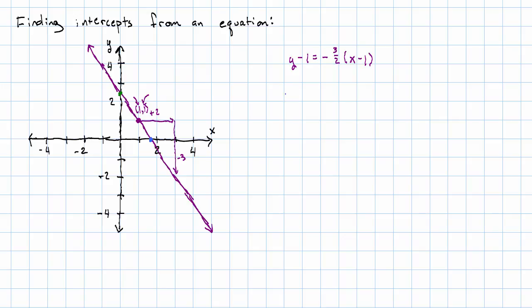Now to find the x-intercept, we set y equal to 0 and solve. So when y equals 0, we have 0 minus 1 equals negative 3 halves times x minus 1. Let's see. I'm going to write this as plus negative 1 so I can distribute more easily. On the left, I just have negative 1. On the right, I have negative 3 halves x plus positive 3 halves.